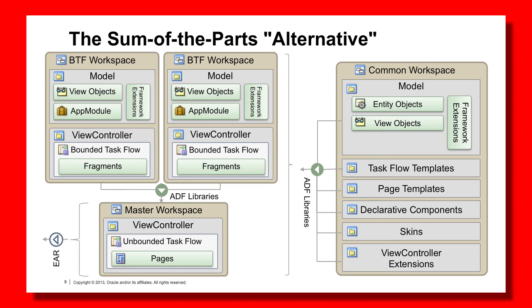In addition, the application modules — the fact that we've gone from one application module in the Common workspace, meaning one root application module with one connection and transaction, and we've shifted the application module to the BTF workspaces such that now they have their own root application module — doesn't this mean we're going to end up with lots of root application modules, application module pools, connections, and transactions per user session? Indeed it might. Except, in a later episode of the ADF Architecture TV channel, we will consider how to make those root application modules magically join up at runtime, such that the user will only take out a set of connections and transactions to the database, purely controlled by you using the Bounded Taskflow transaction options.